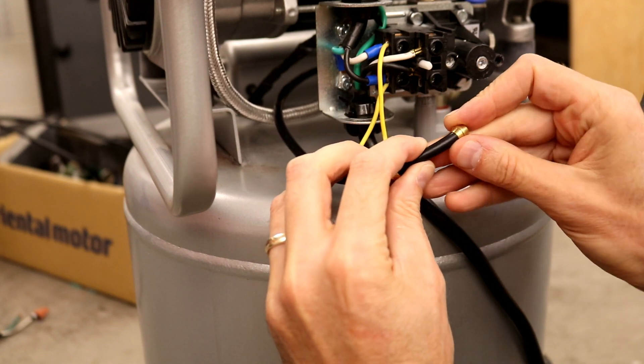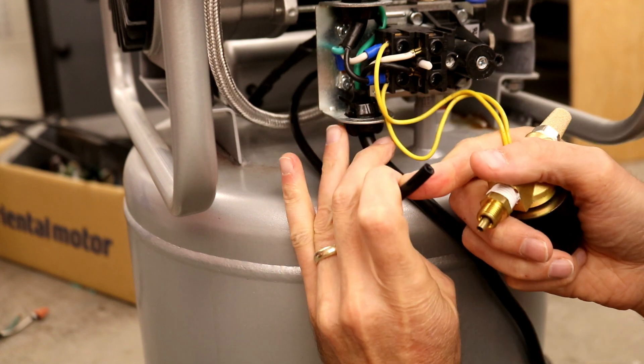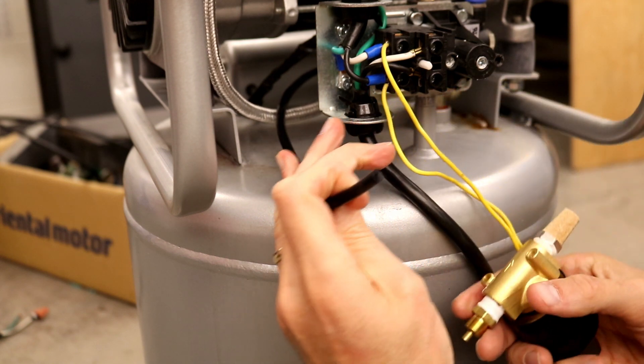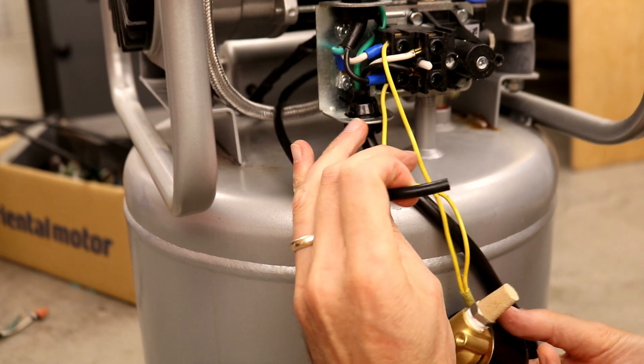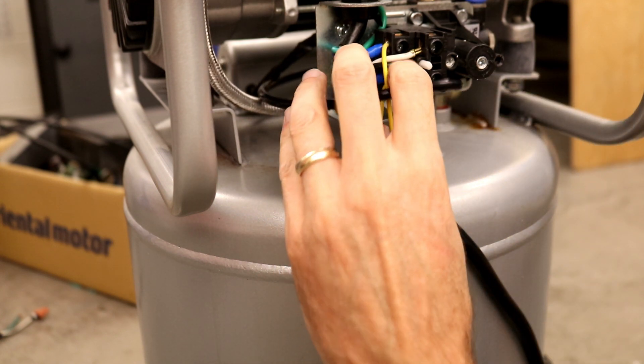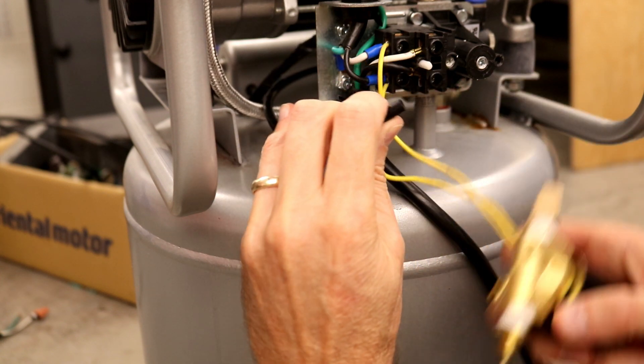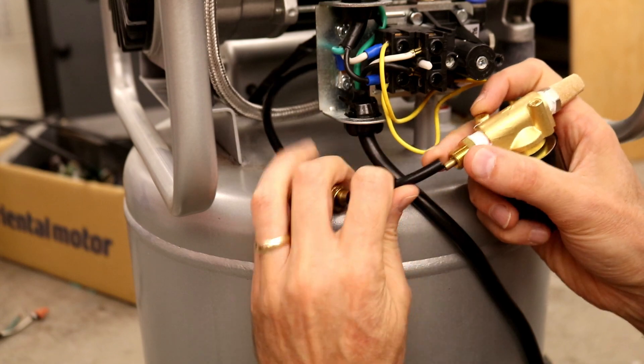Cam Technic on Instagram had the clever idea of using a normally open air solenoid to control the unloader. The pressure switch controls the motor and now the solenoid which is closed when the compressor is operating, directing all the air into the tank. Once the motor stops, the solenoid springs open and the trapped cylinder air unloads.